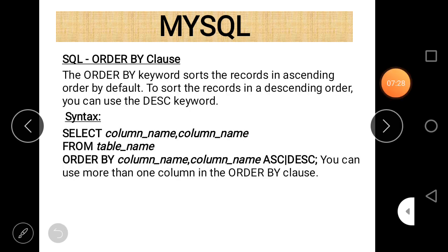Next is the ORDER BY clause. If you want to arrange data in ascending or descending order, ORDER BY clause is used. By default, ORDER BY sorts in ascending order. To sort in descending order, use the DESC keyword. The syntax is: SELECT column_name FROM table_name ORDER BY column_name ASC|DESC. You can use more than one column in the ORDER BY clause.